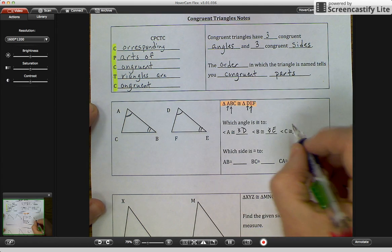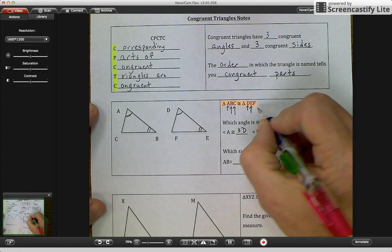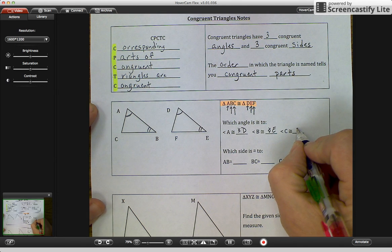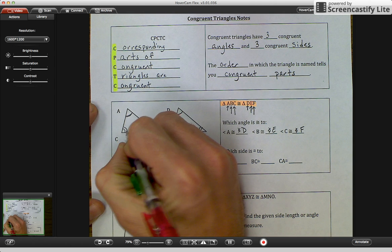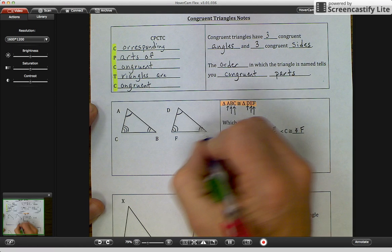And then angle C is the third letter. So angle F is the third letter. So angle C, one, two, three marks, is congruent to angle F, one, two, three marks.